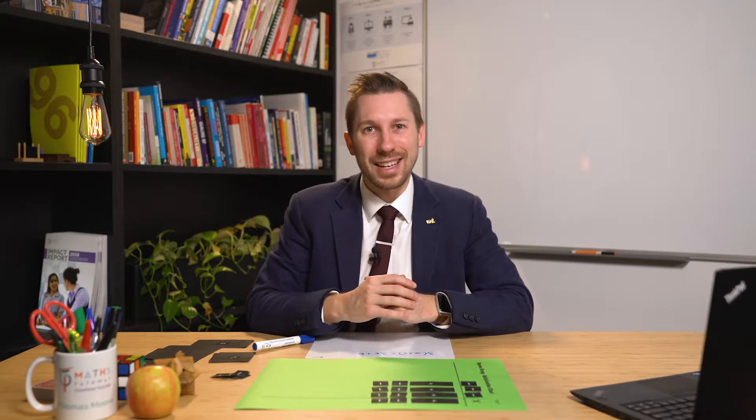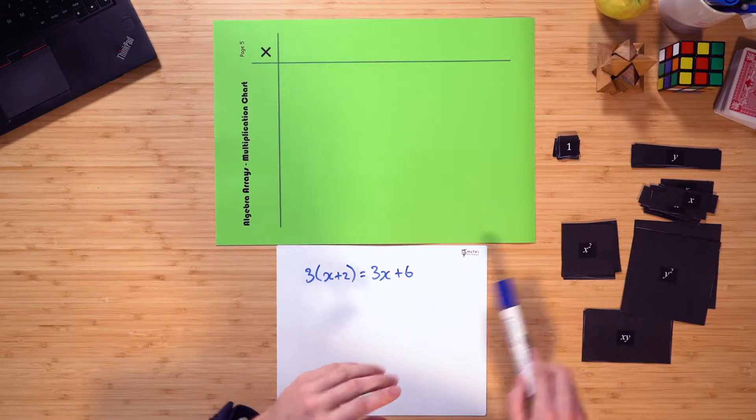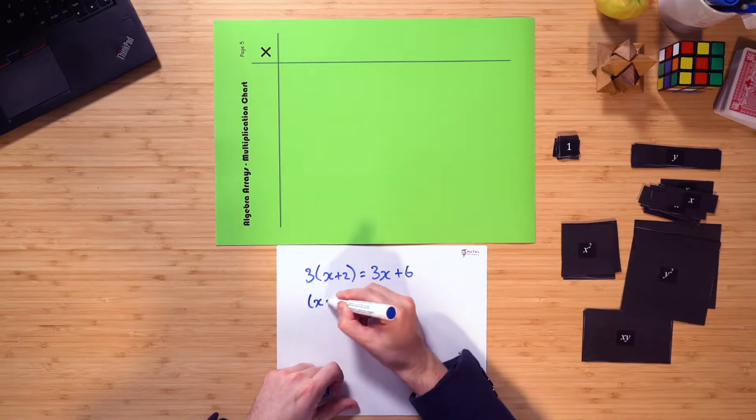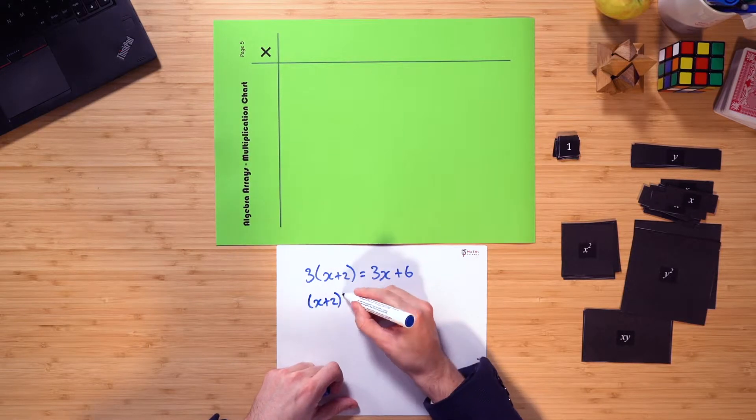All right, well, what about quadratics? Well, here's how the model works when applying it to them. So let's have a look at the expression, x plus 2 multiplied by x plus 1, and see what we end up getting.